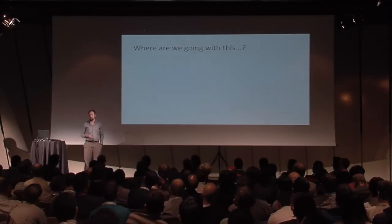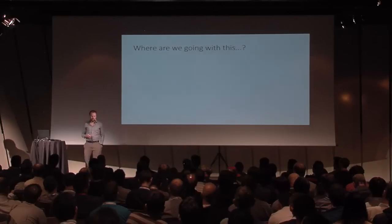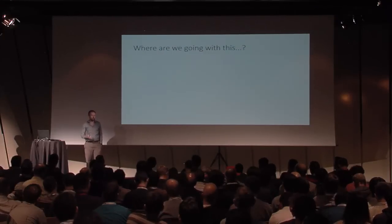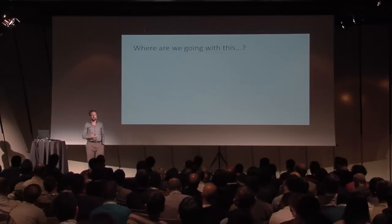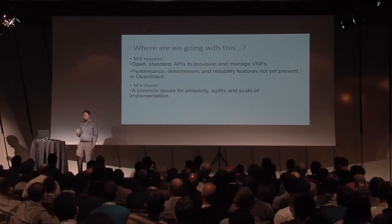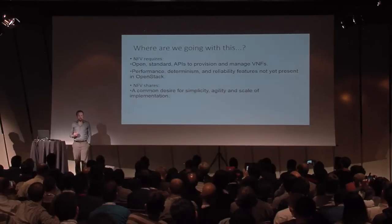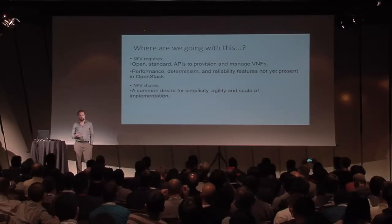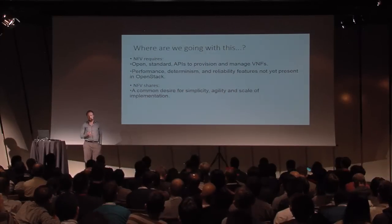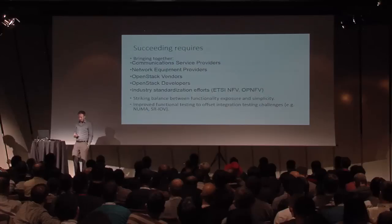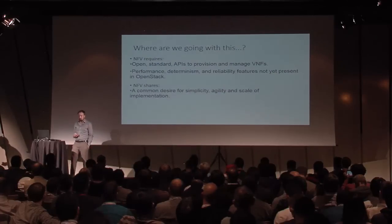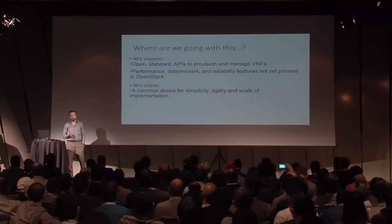Steve picks up: Alan outlined the problem space, Adrian dove into the technology, and Steve covers how the community has been working through the Juno cycle to meet NFV requirements within OpenStack as the virtual infrastructure manager. At a high level: NFV requires open standard APIs for provisioning virtual network functions on the infrastructure layer. It also requires performance, determinism, and reliability features not necessarily in OpenStack today. And it shares the common goals of simplicity, agility, and scale of implementation when deploying — aligning with the core ideals of OpenStack.